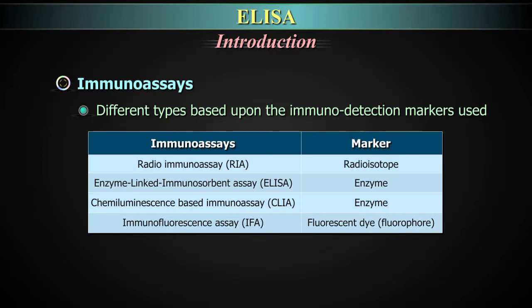For example, when the immunoassay is radioimmunoassay, what we call RIA, the marker is a radioisotope. When it is enzyme-linked immunosorbent assay, what we call ELISA, the marker is an enzyme.